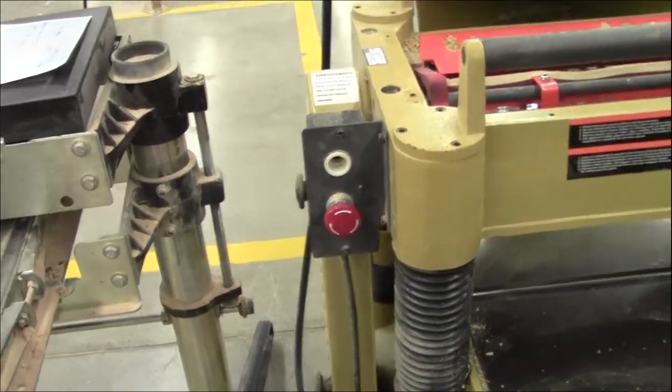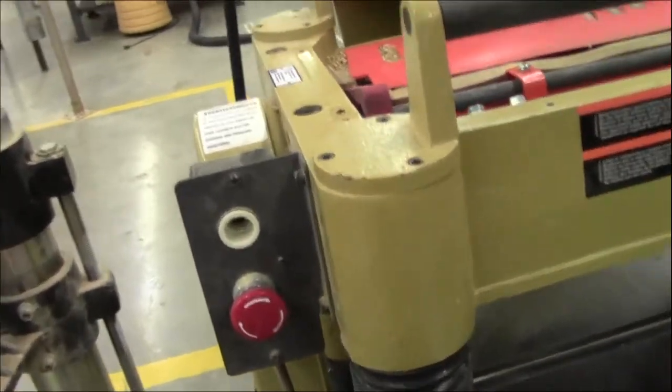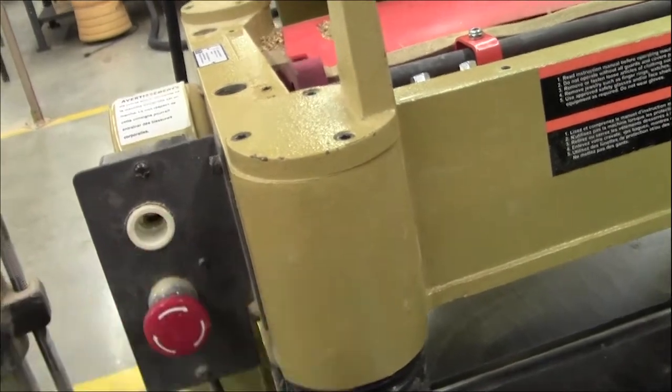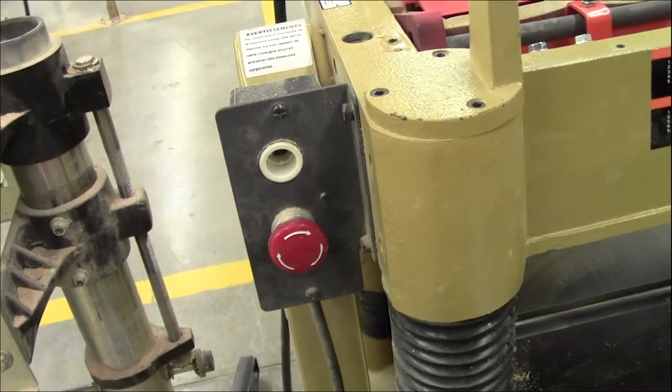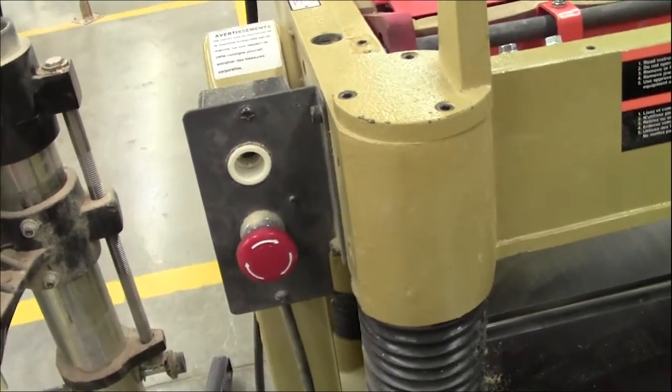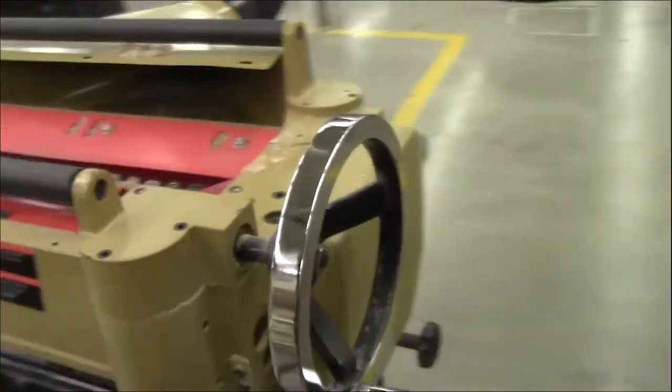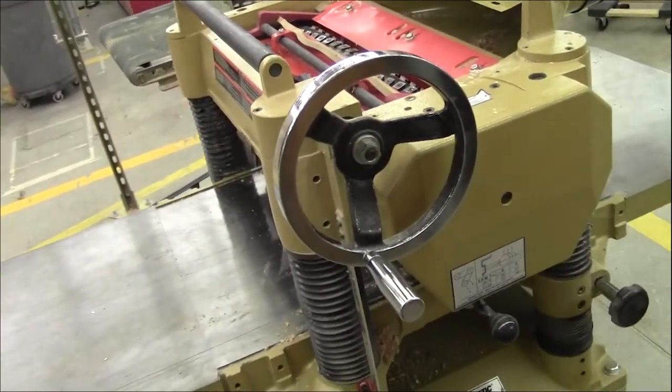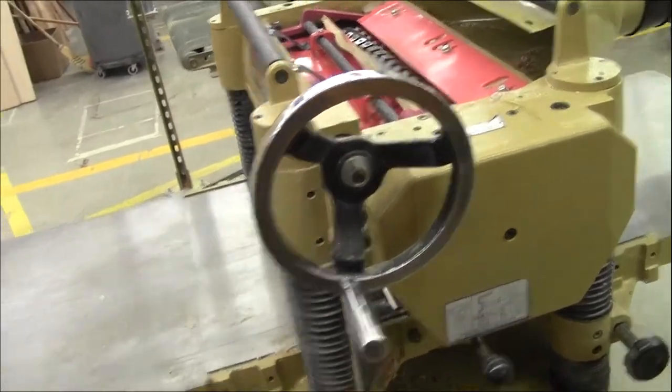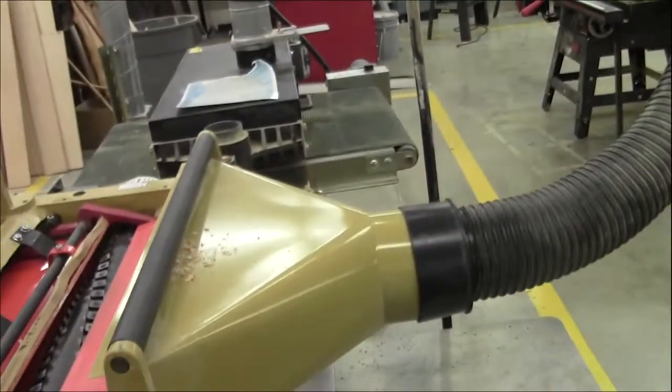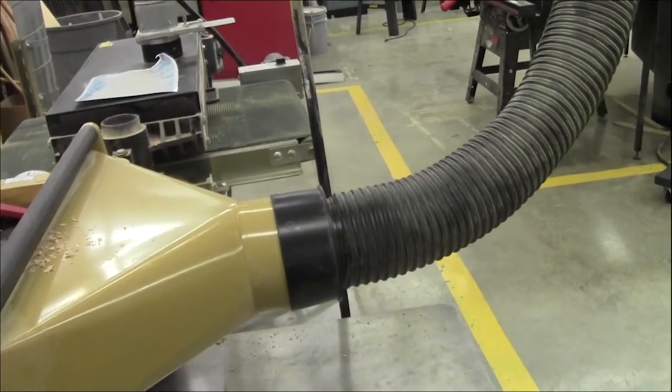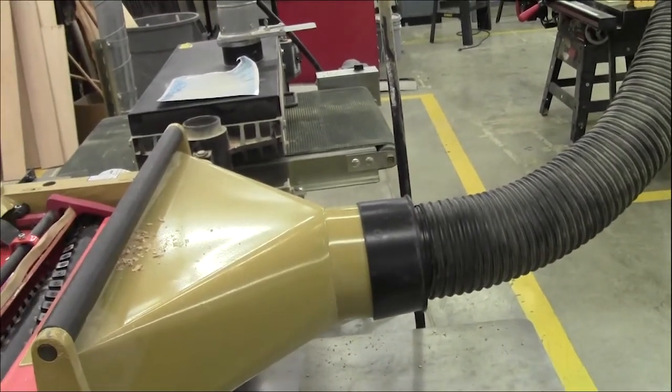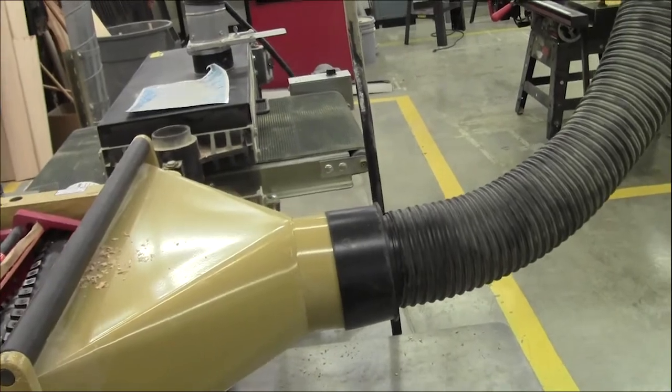Other important things to know is where the on and off switch is. The on switch broke off, but you push the little button and it'll turn on. It has a push, lock, stop, so it will not work until you release the lock. We have a wheel here to change the thickness and move it up and down. One of the most important things is dust collection. It's one of the messiest machines if you don't have dust collection.